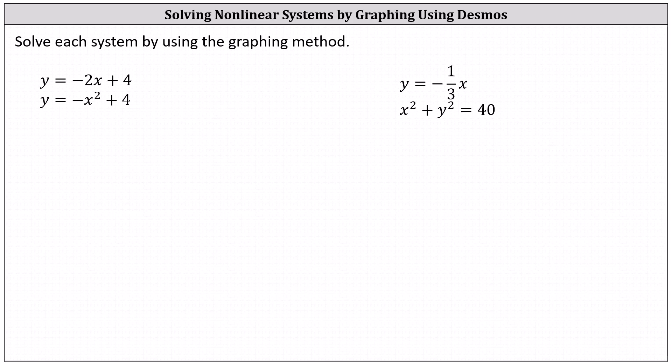Our first system is y equals negative two x plus four and y equals negative x squared plus four. We'll be solving this system using the Desmos graphing calculator. Let's go to Desmos.